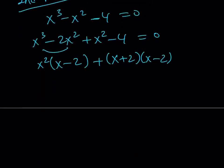x - 2, again, is a common factor. That shouldn't be a surprise. And then we get x² + x + 2 = 0.